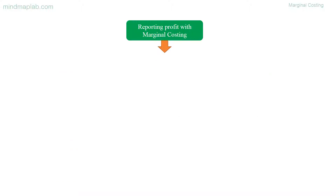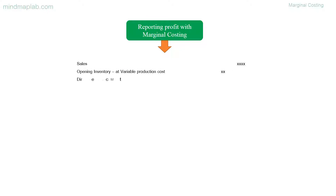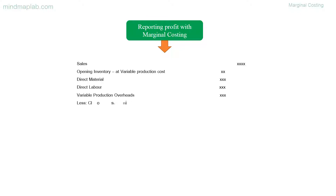Reporting profit with marginal costing: The sales figure is the total sales for the period. Opening inventory should be at variable production cost — that is, it should include direct material, direct labor, and variable production overheads only.